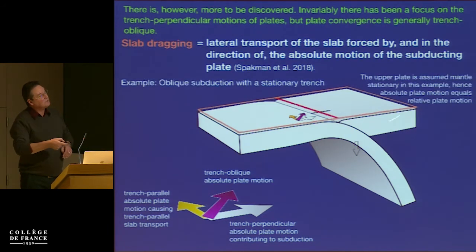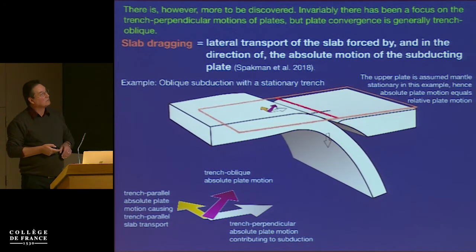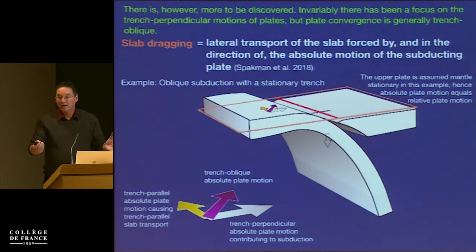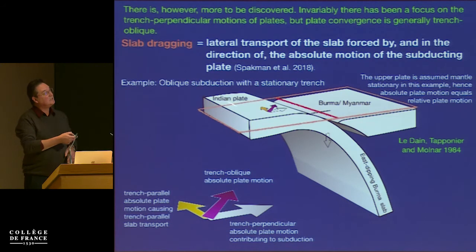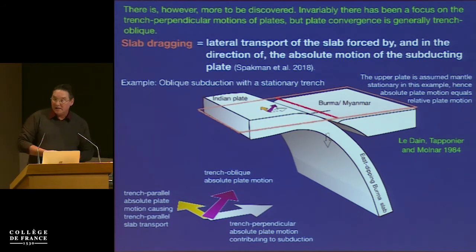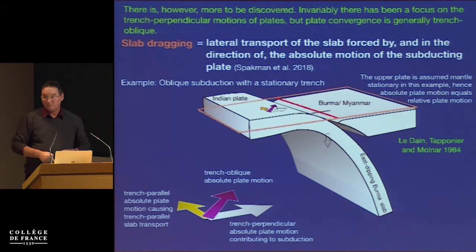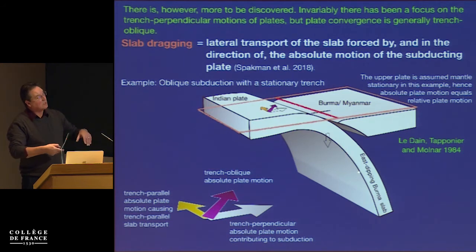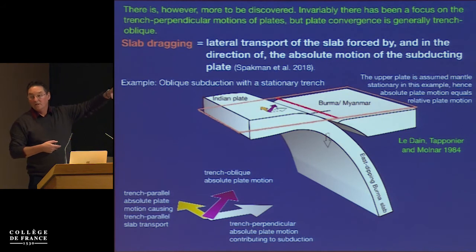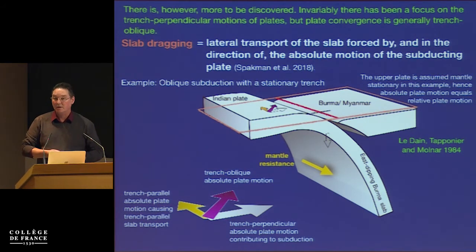This is an example of oblique subduction where I keep the upper plate fixed for the sake of argument. The alongside component and the subducting component are both present. Do we have a natural example? Yes — it's the Indian plate versus Eurasian plate, specifically the Burma slab. This was already proposed in a 1984 paper by Le Dain, Tapponnier, and Molnar, who tried to explain horizontal P-axes of intermediate earthquakes in this slab. They said, because the Burma slab is attached to the Indian plate, it may be transported — they called it dragged — also to the north. The mantle resistance is different here; it acts alongside, parallel to the strike of the slab, and there can also be a compressive component along the entire slab edge, inducing a complex state of stress.